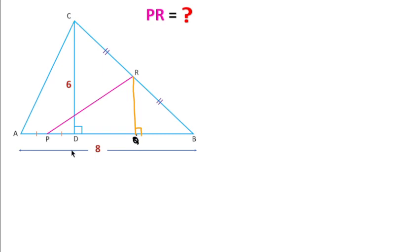Now in triangle CDB and triangle RQB, we can write angle D equals angle Q, which equals 90 degrees, and angle B is common in both triangles. So by angle-angle similarity, triangle CDB is similar to triangle RQB.